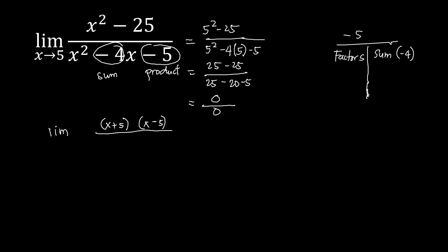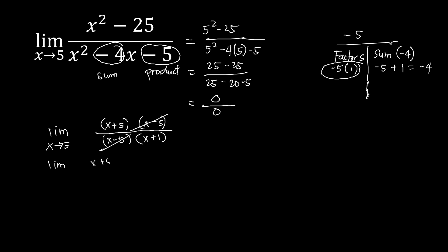Since we have negative 5 as our product, we try negative 5 times 1: negative 5 plus 1 equals negative 4, which satisfies our conditions. So the denominator factors as x minus 5 times x plus 1. We can now cancel x minus 5 from numerator and denominator, leaving the limit of x plus 5 over x plus 1 as x approaches 5.